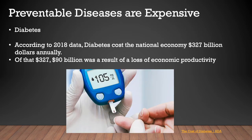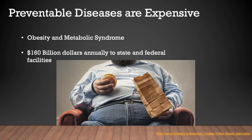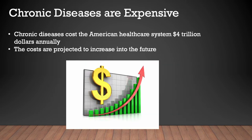According to 2018 data, diabetes cost the national economy $327 billion annually. Obesity costs $160 billion annually. And these diseases are just getting more expensive every year. Chronic diseases — including the medical costs and the loss of productivity from people calling in sick — cost our nation $4 trillion annually, and again, these costs are going up.